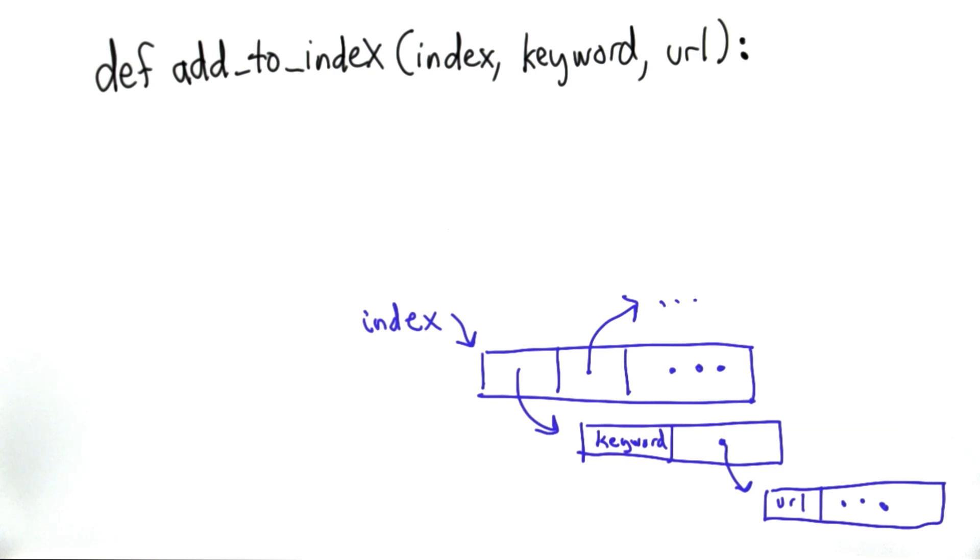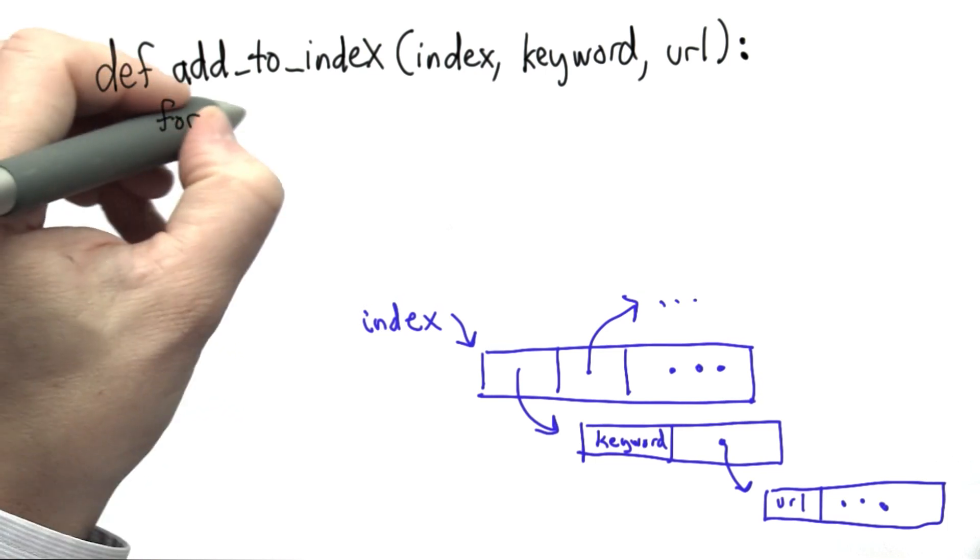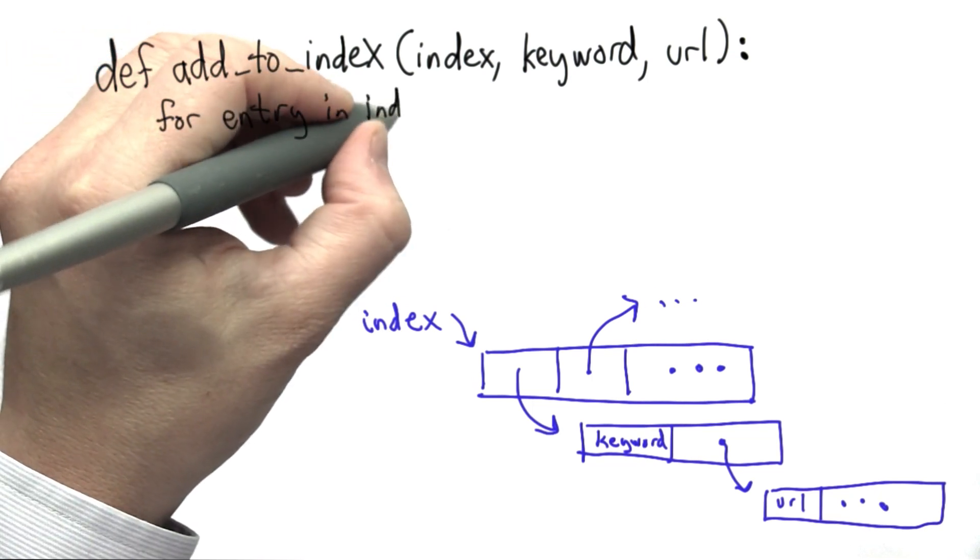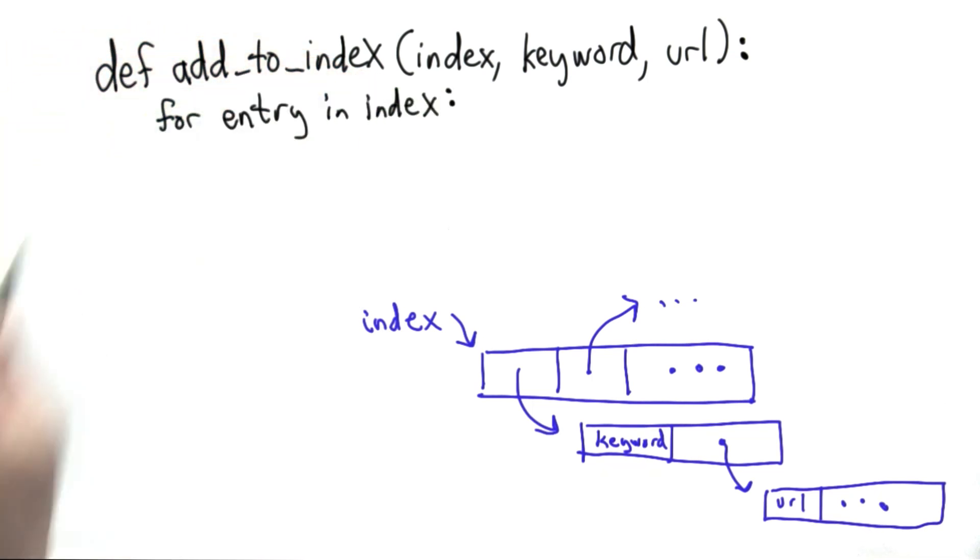So the first thing we need to do is check whether the keyword already exists in the index. If we can find it, well then we want to modify that entry rather than creating a new one. The natural way to do that is to use a for loop. We're going to loop through the elements of index. We'll give each one the name entry to use in the block. So this is what entry will be.